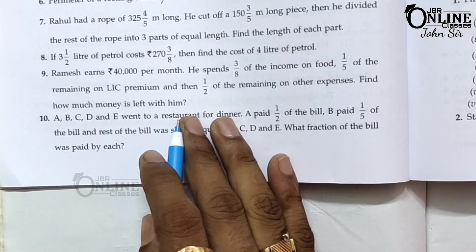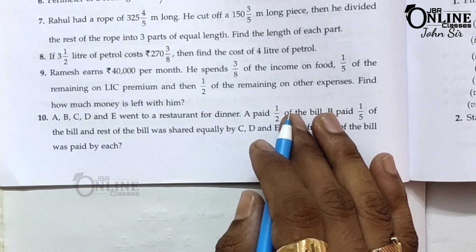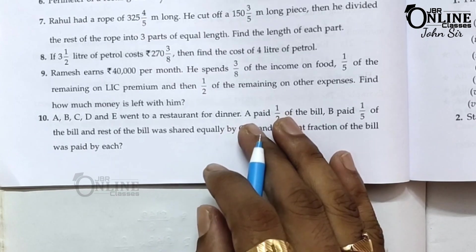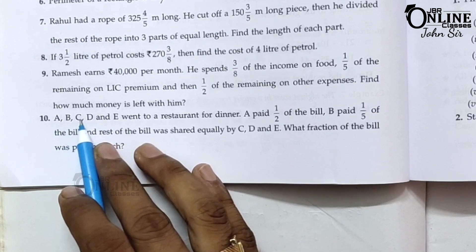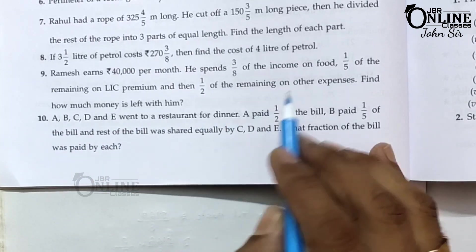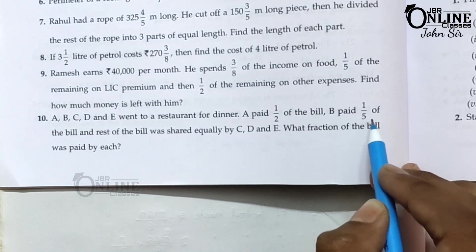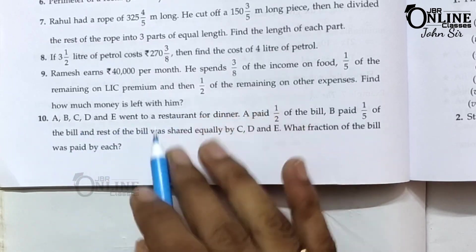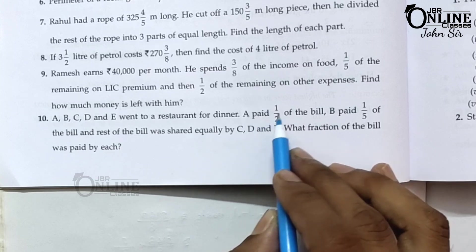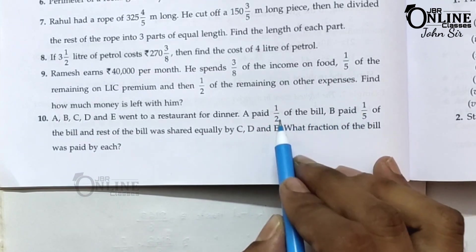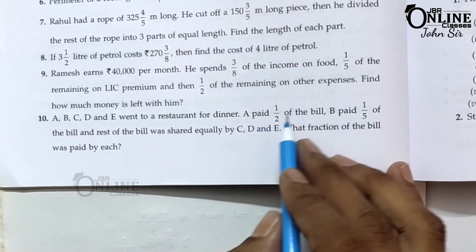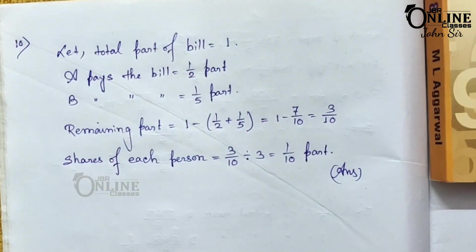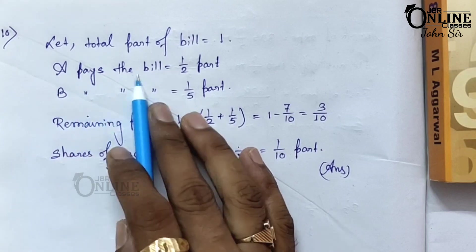If you like this video please share it with your friends and relatives, and please subscribe to my channel and press the bell icon. Sum number 10: A, B, C, D, and E went to a restaurant for dinner. A paid half of the bill, B paid one-fifth of the bill, and the rest of the bill was shared equally by C, D, and E. What fraction of the bill was paid by each?